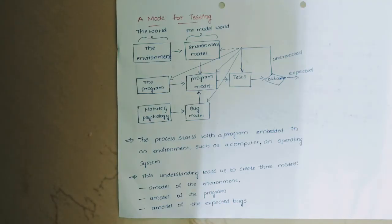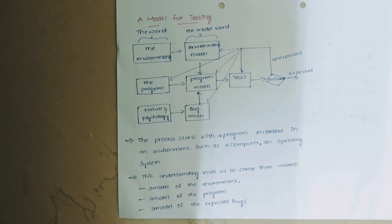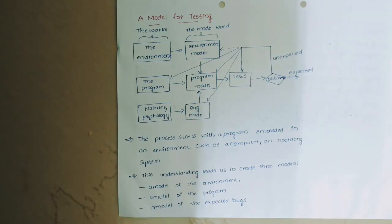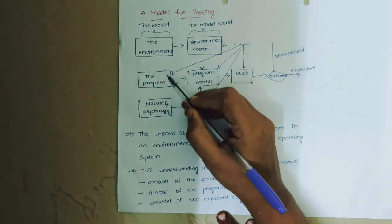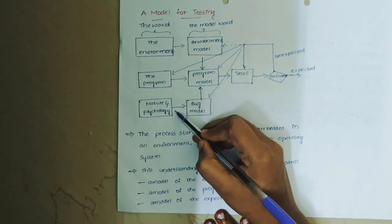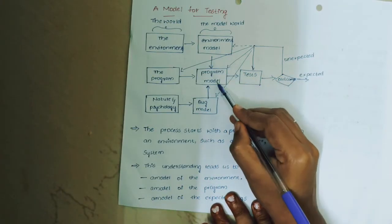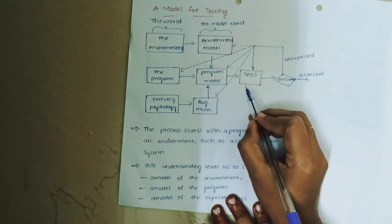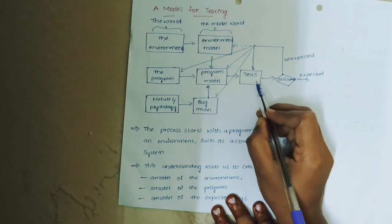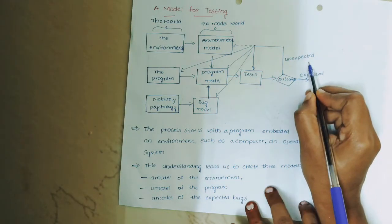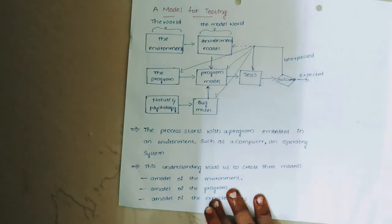The model for testing includes various kinds of program models. Programs, test bugs, expected outcomes, and unexpected outcomes all come under the model for testing. The world model includes the environment, the program nature, and psychology. The environmental model includes the program model and the bug model. In the program model, testing outcomes should be expected; if unexpected, it feeds back into the environmental model.